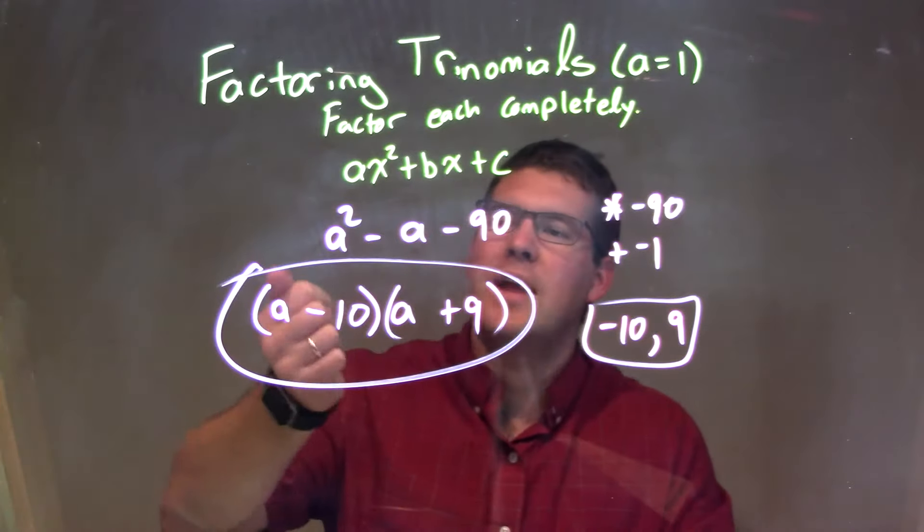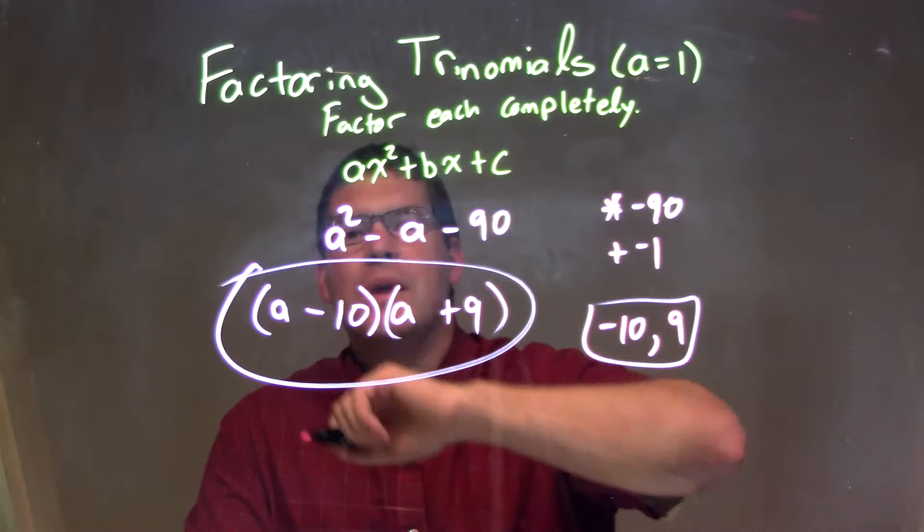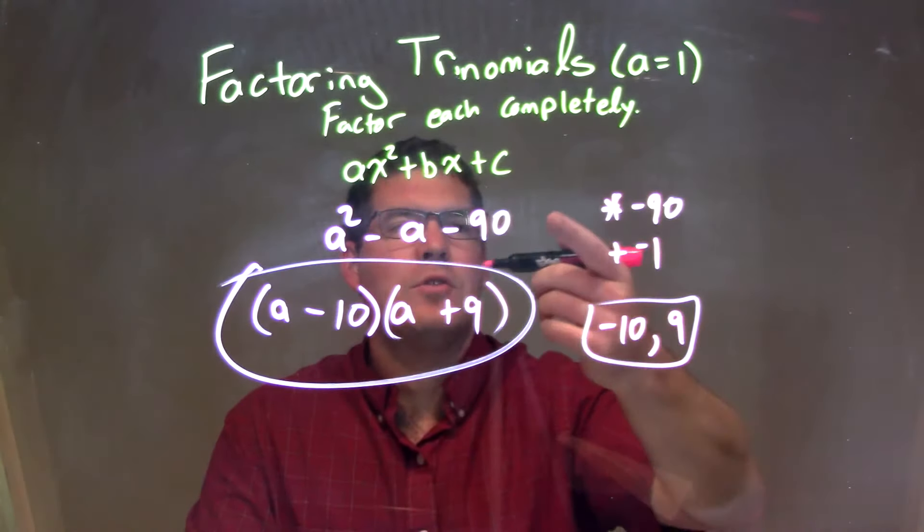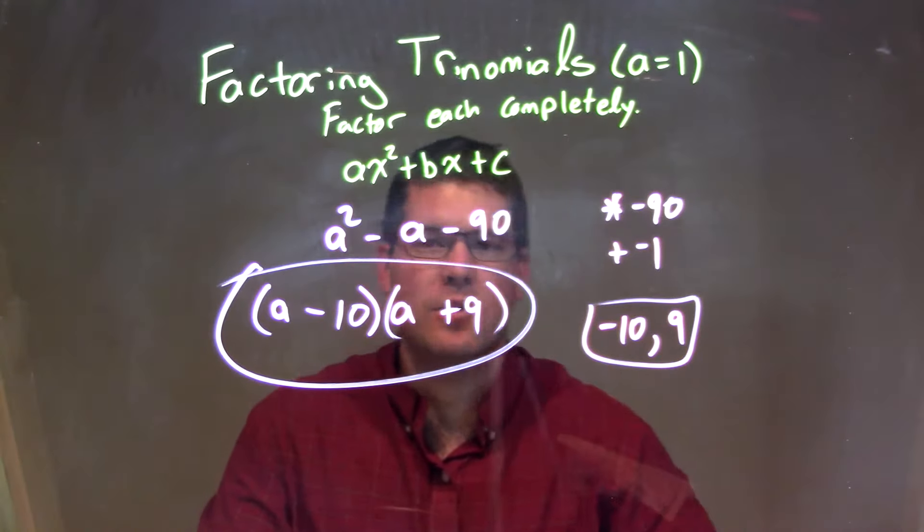So let's recap. We're given a squared minus a minus 90. Since we have a coefficient of our a squared being 1, we ask ourselves a question: what two numbers multiply to be our c value, which is negative 90, and add to be our b value, which is negative 1?